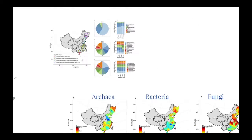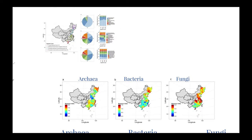The spatial patterns of diversity for the different microbial groups in this area were different. The archaea and fungi diversity was not different between the vegetation types, but the diversity in the SBEF was significantly lower than those in the TMCF.